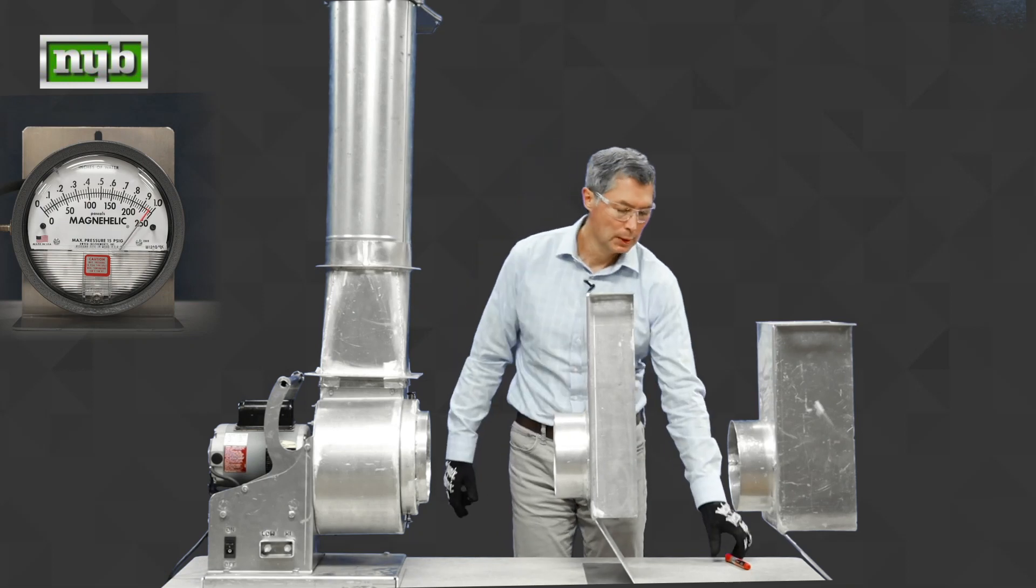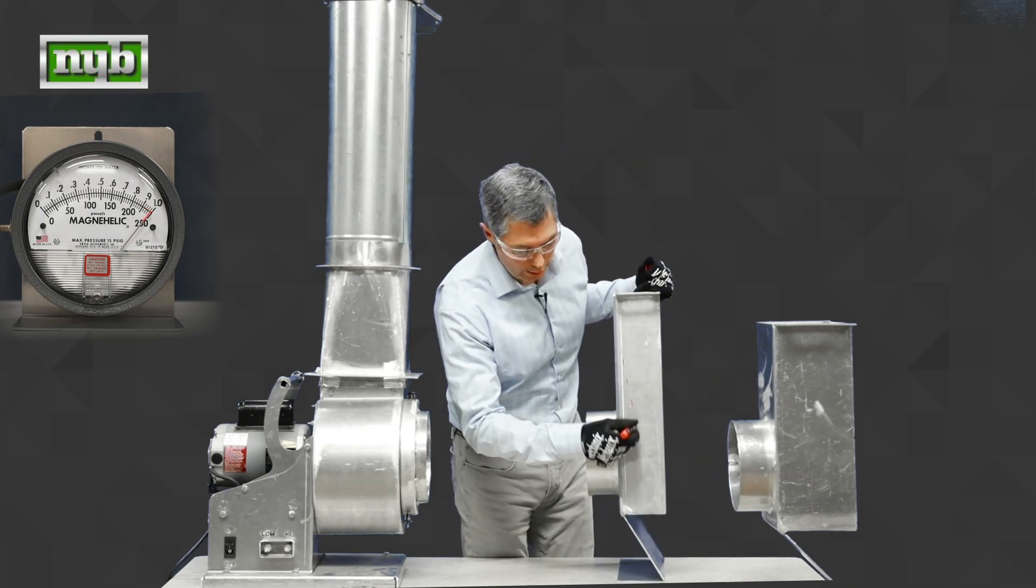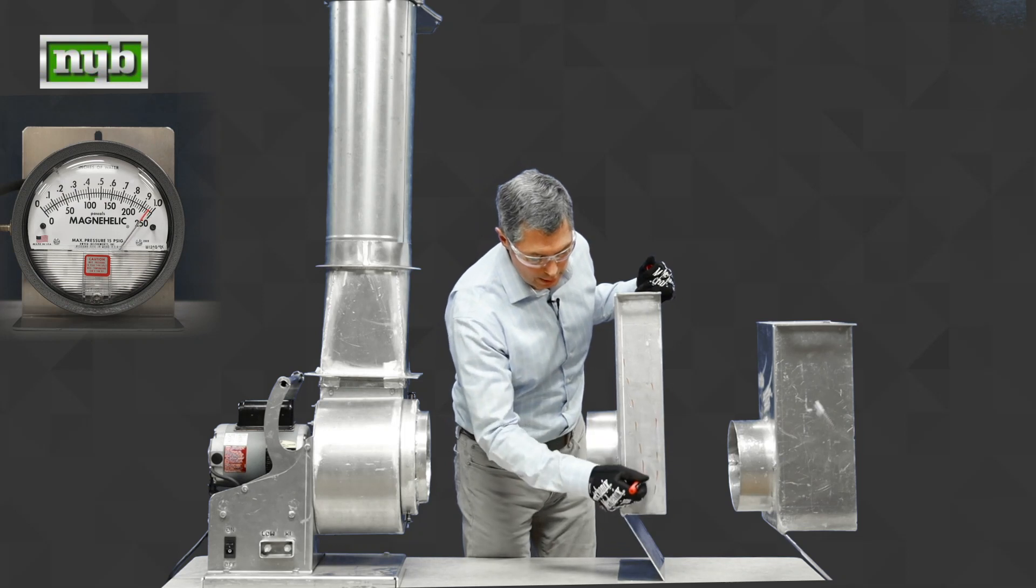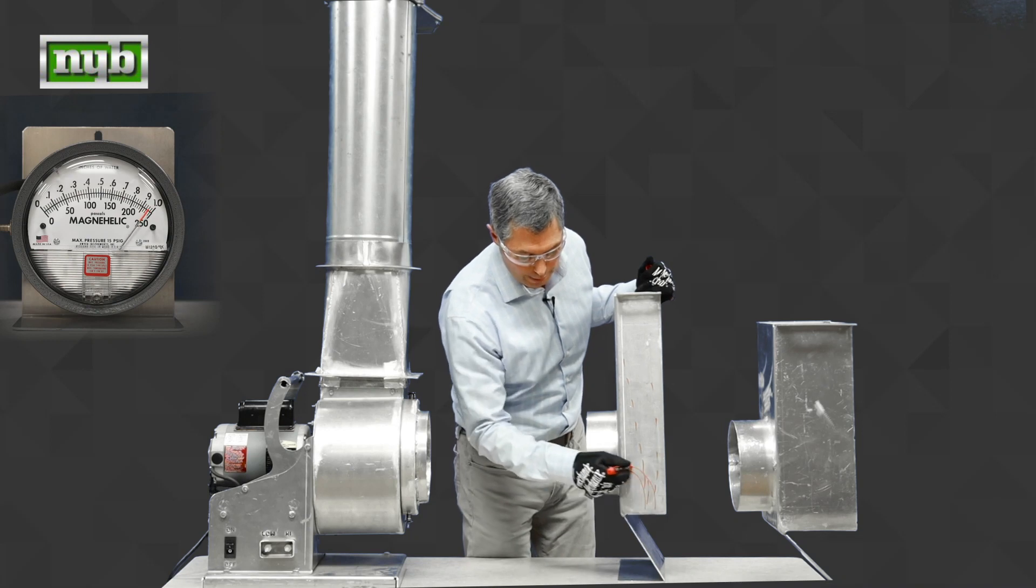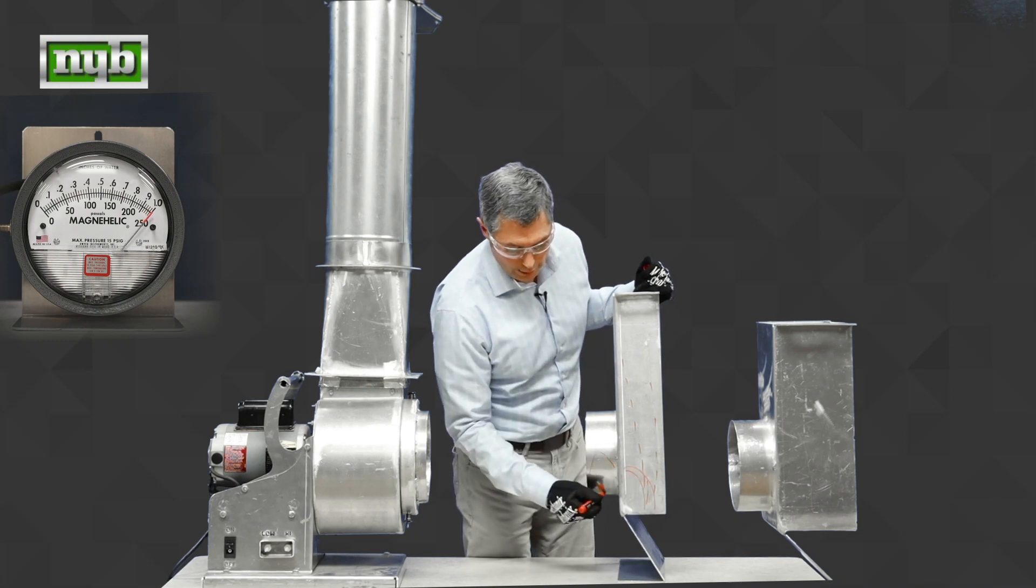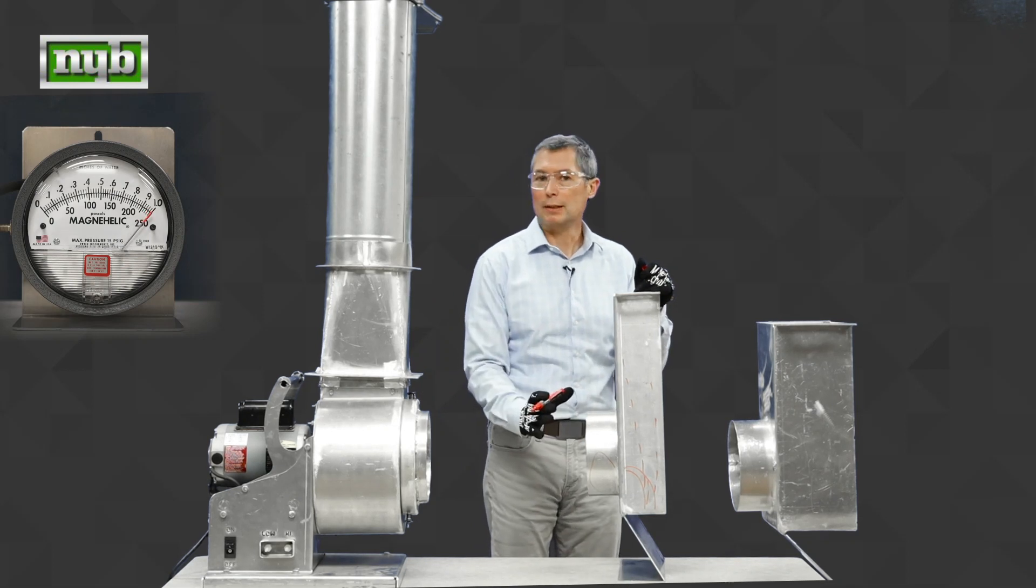So let's look real quickly as to what's happening. Again, air has mass. So that mass wants to go in a straight line as it comes down, hits the bottom of this duct box, and then bounces back up. And we're only utilizing the bottom portion of this ductwork. The top region never sees any air.